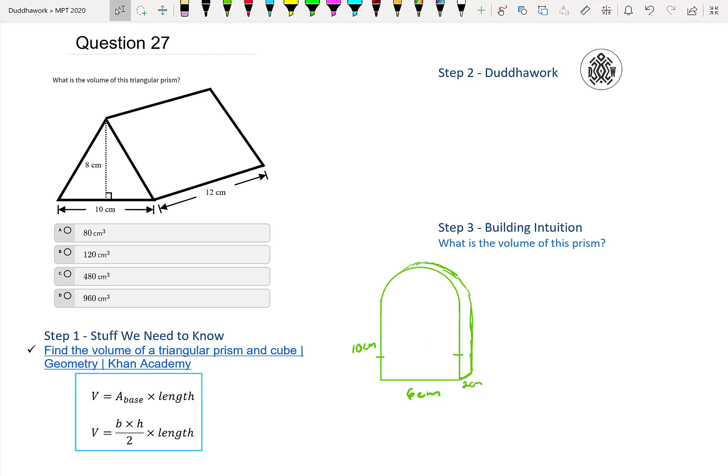So for this question, we need to find the volume of a particular triangular prism. And to do so, we need to know the theory behind it. And we can watch the video here. It's from Khan Academy. The link is in the description below or in the card above.